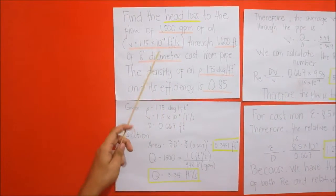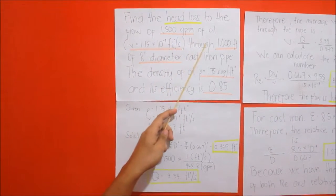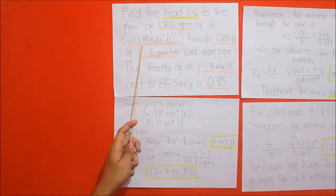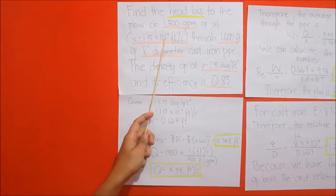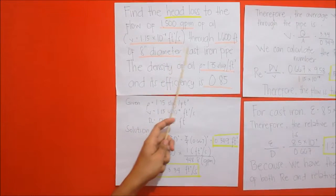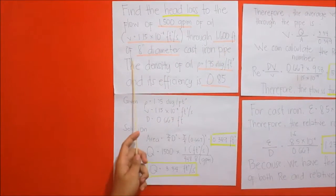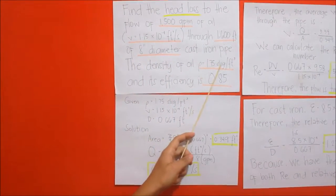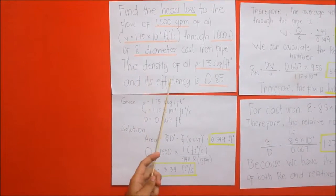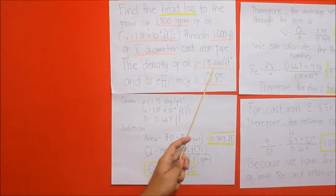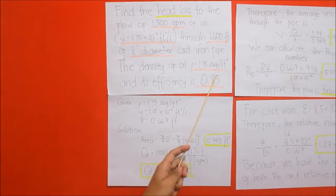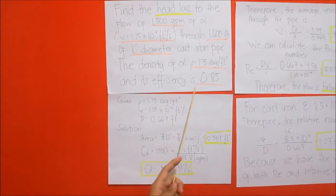Find the head loss to the flow of 1,500 GPM of oil where the viscosity is equal to 1.15 times 10 to the power of negative 4 square feet per second through 1,600 feet of 8-inch diameter cast iron pipe. The density of oil is 1.75 slug per cubic feet and its efficiency is 0.85.